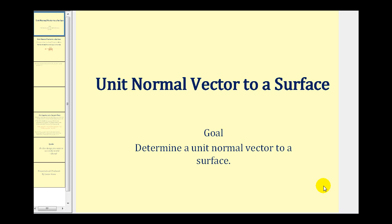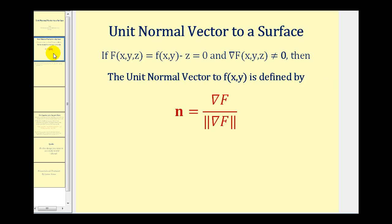Welcome to a video that will show how to determine the unit normal vector to a surface. If big F of x, y, z is equal to f of x, y minus z equals zero, and the gradient of big F doesn't equal the zero vector, then the unit normal vector to f of x, y is defined by the gradient of F divided by its magnitude. So we need to normalize the gradient of big F.